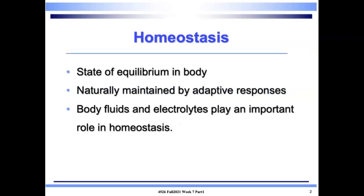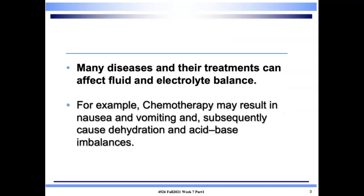Our body is constantly trying to keep us in a state of equilibrium, which is homeostasis. We have many adaptive responses that enable us to remain in equilibrium. We spoke about ABGs and the ability for our body to work through our lungs and kidneys to restore acid-base balance. Body fluids and electrolytes play a very important role in homeostasis. Many diseases and their treatments can affect fluid and electrolyte imbalances — this is probably one of the most common areas in your placements. Every single patient will have fluid and electrolyte imbalances. For example, chemotherapy drugs cause nausea and vomiting, which leads to dehydration and acid-base imbalances.